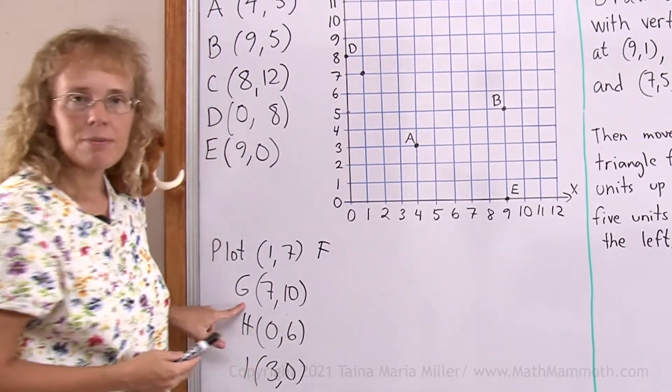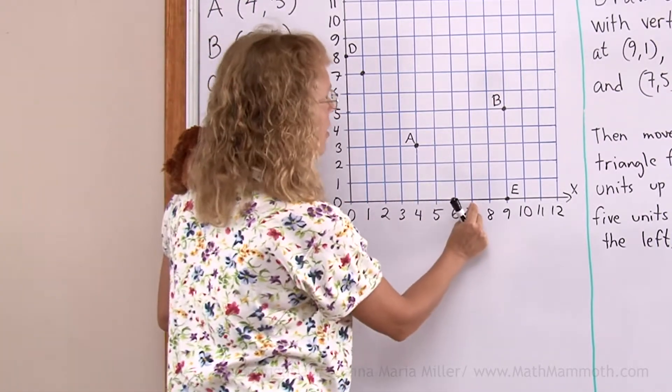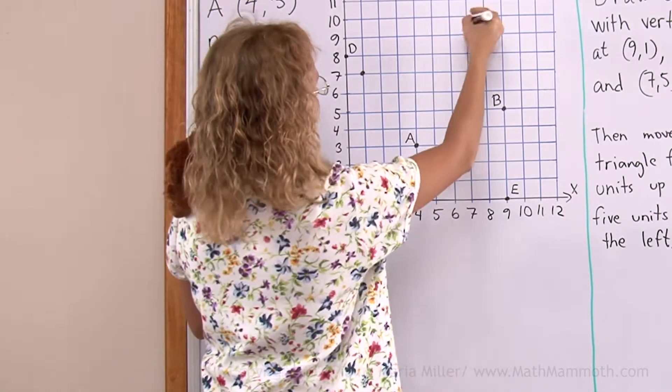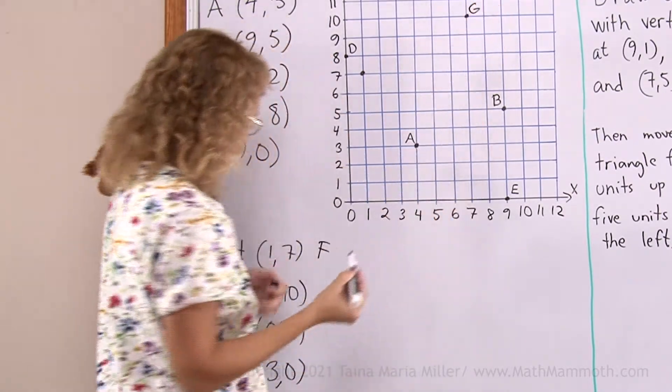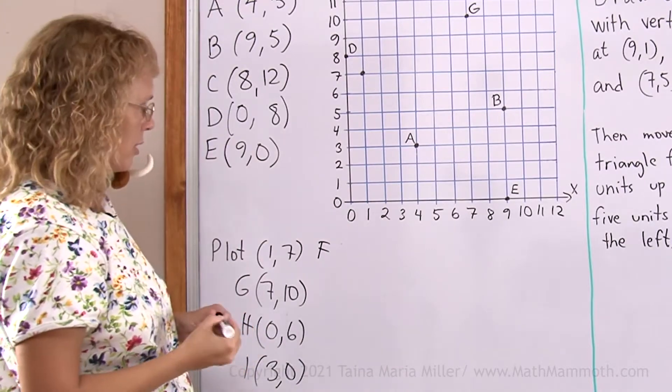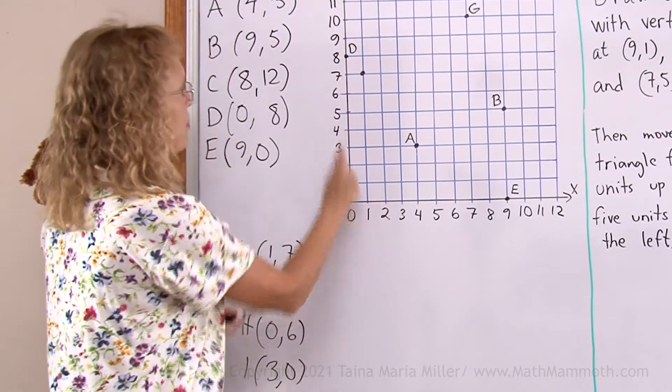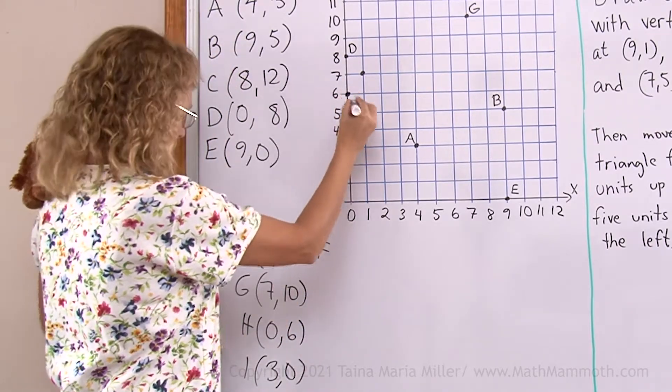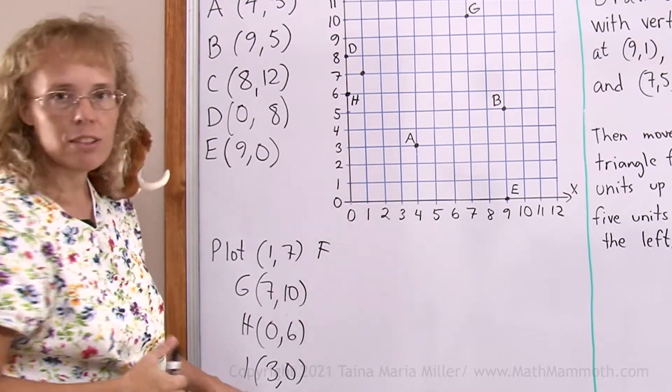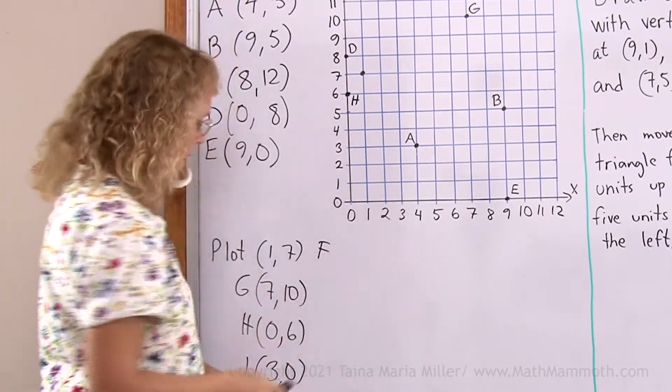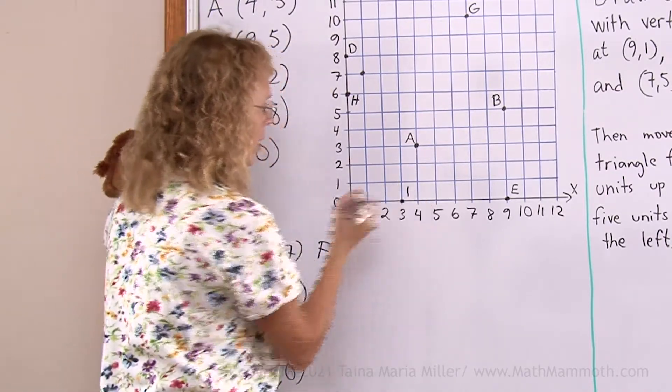Point G. First travel to 7 on the x-axis, then go up 10 units. 7 here, then go up 10 units. Then H, 0, 6. First travel on the x-axis 0 units, so don't go anywhere. Then 6 up. That is H. And then I, 3, 0. First travel on the x-axis 3 units, then go 0 units up. Travel here, and then don't go up at all, so it is here.